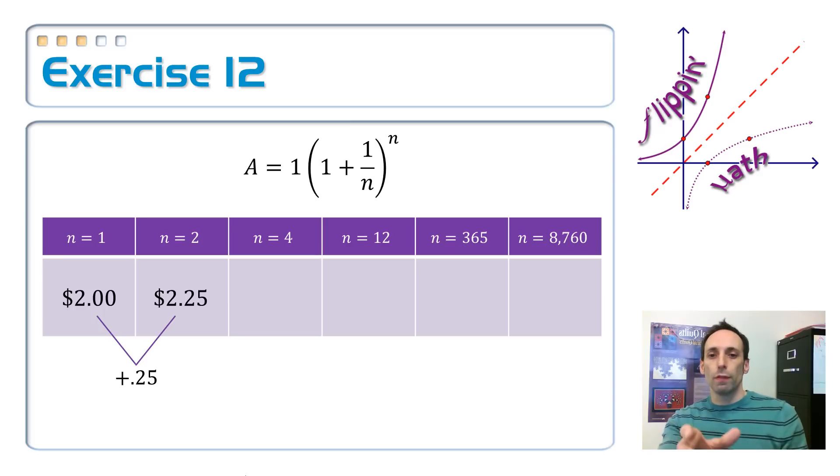How about if we did it four times? So we did it quarterly. Now I'm up to $2.44. Oh, well, this time I only went up by 19. That's a little disappointing.